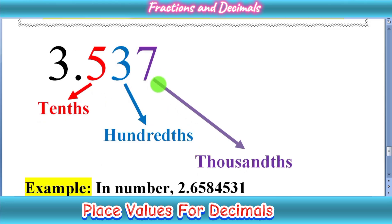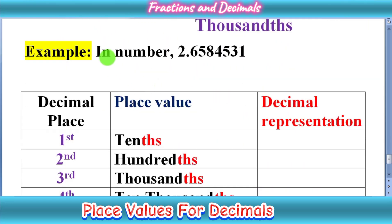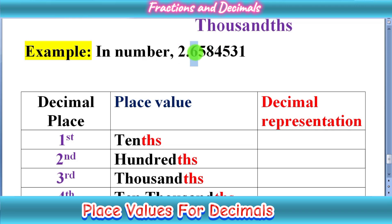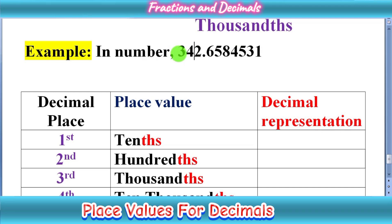So let's recall the place value table. For example, we have the number 2.6584531. First of all, how to read decimals? You have to read the whole number as you read earlier, but in the decimal part, you have to read each digit one by one. For example, 2.6584531 — if we have a larger number like 342, we can read it as 342 as usual, but here you read the decimal part digit by digit: 6584531. This is the basic method of reading decimals.